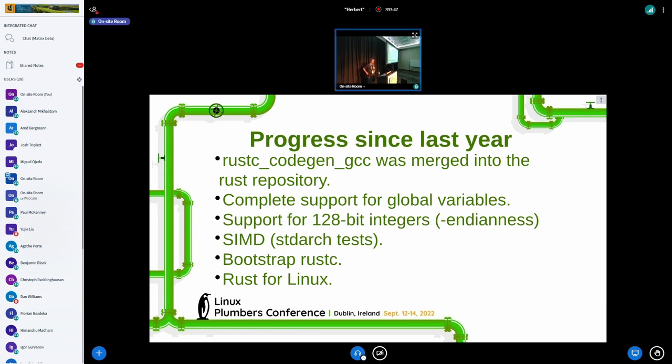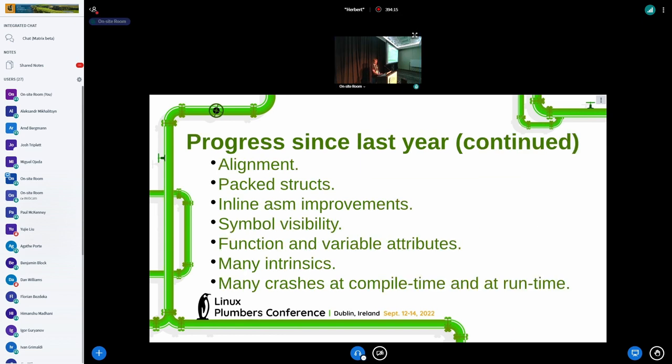And also, we can compile Rust for Linux. We can load the modules that are written in Rust, compiled with this GCC code gen, and they execute correctly. I will talk a bit about that later. It requires a few changes to the GCC code gen, but nothing major and will fix that as well. By the way, if you have any questions, feel free to interrupt me at any time.